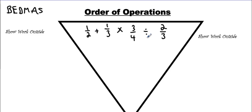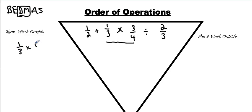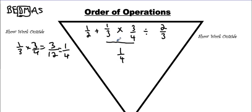The first step we have to do in this question is multiplication. And I know you're thinking division comes first, but it's a tie between division and multiplication — whichever one comes first in the equation is what we do first. So since multiplying occurs first, you're going to underline it, show your work outside, and then multiply these. You're going to get 3 over 12. Always reduce your answer, and then write it down exactly below the line that you made. The next step is to bring down everything else.